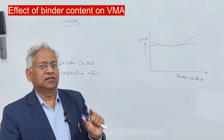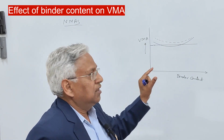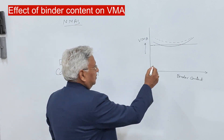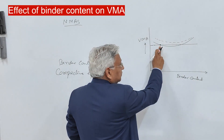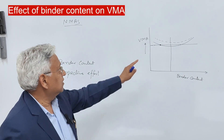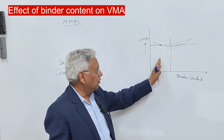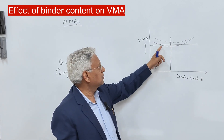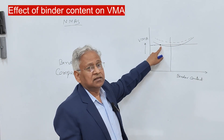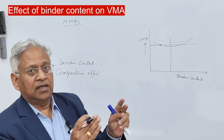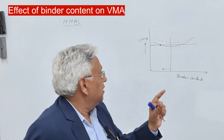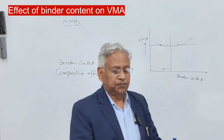If the minimum VMA condition cannot be satisfied, this indicates that your job mix formula should be changed. You can achieve the desired VMA either by changing the gradation or by changing the source of aggregate. You should never select a binder content on the dry side of the optimum binder content just because it satisfies the minimum VMA condition here, because selecting a binder content on the left side of the optimum will render a mix that is too dry and prone to segregation.